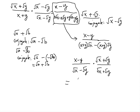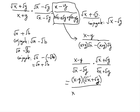The numerator becomes (x − y)(√x + √y), which we keep for now. The denominator uses FOIL: (√x)² gives x, the middle terms conveniently go away because of the plus and minus signs turning to zero, and then minus (√y)(√y) gives minus y. So the denominator becomes x minus y.